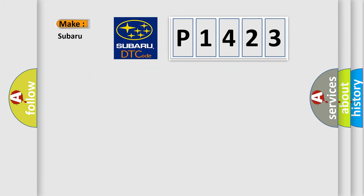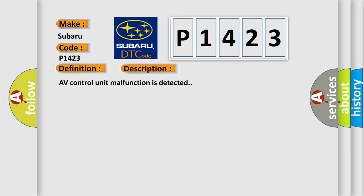So, what does the diagnostic trouble code P1423 interpret specifically for Subaru car manufacturers? The basic definition is AV control unit. And now this is a short description of this DTC code: AV control unit malfunction is detected. This diagnostic error occurs most often in these cases. Replace the AV control unit if the malfunction occurs constantly.